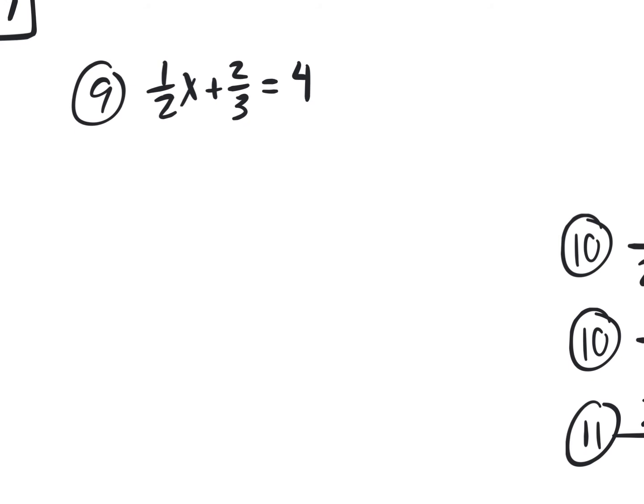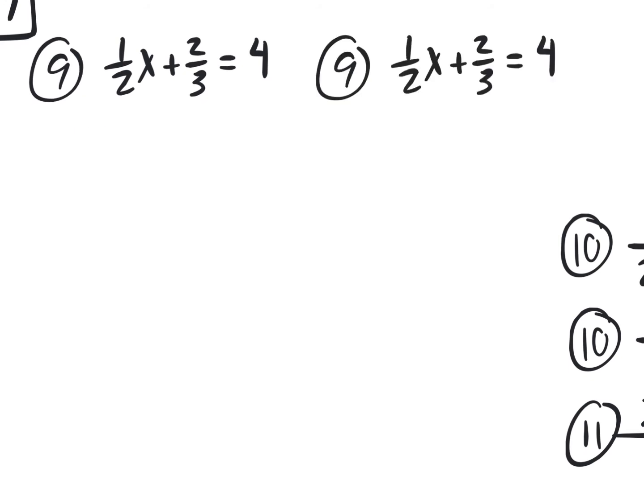I'm going to pause while you guys copy down number 9. I wrote number 9 two times — I'm going to show you two different roads to the same place, and you get to pick one. There's always a shortcut, the fastest. But if you don't like the fastest route, you can go the long route. Number 9, first option: let's get rid of all the fractions one fraction at a time.